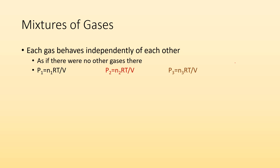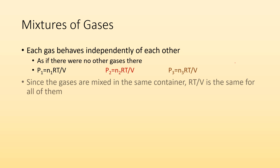Each gas behaves independently — as if it's the only gas there. So the pressure from gas number one is going to equal the moles of number one times RT over V. Same thing for the partial pressure for gas number two, and partial pressure for gas number three — just rearranging the PV equals NRT formula to give us the pressure setup.